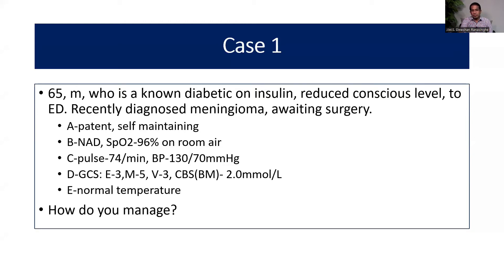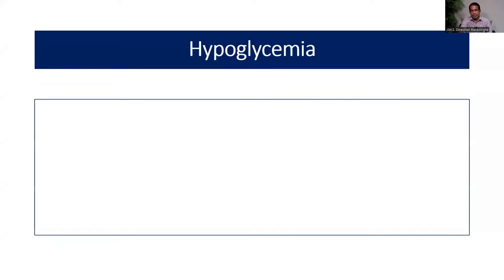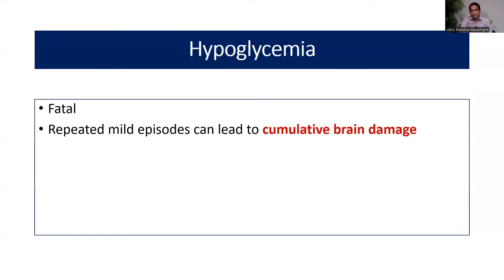Since this patient has a recent diagnosis of meningioma and is awaiting neurosurgery, relatives may worry mainly about advanced disease. But when you go through simple ABCDE, we find the patient has significant hypoglycemia. Hypoglycemia is very important because it can be fatal, and repeated mild episodes may lead to cumulative brain damage. That is why it is so important to know about the management of hypoglycemia.